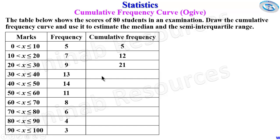It's going to be 21 plus 13, giving 34. 34 plus 14, giving us 48. 48 plus 11, giving us 59. 59 plus 8, giving us 67.